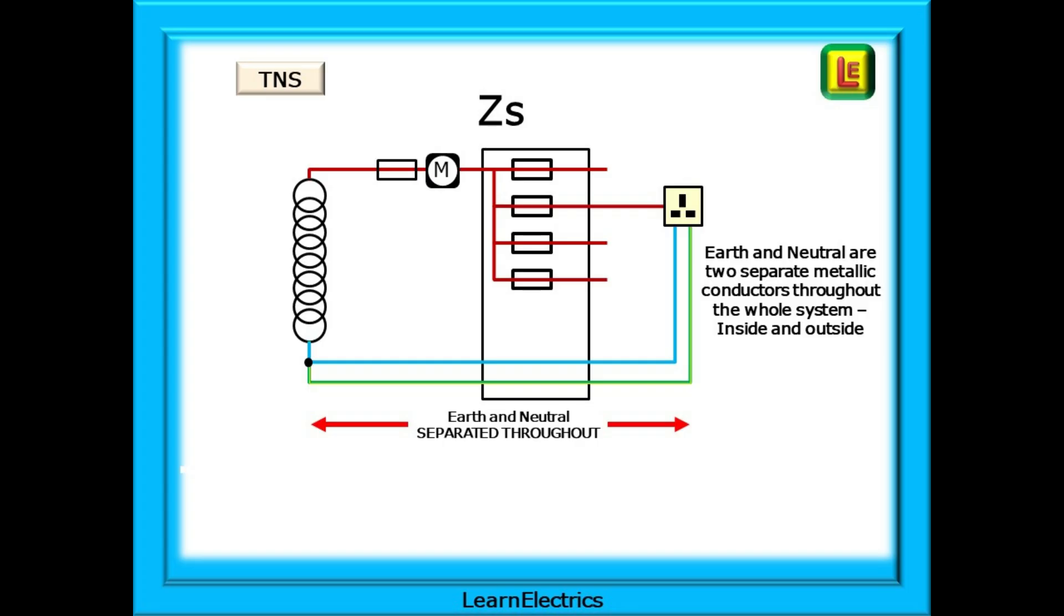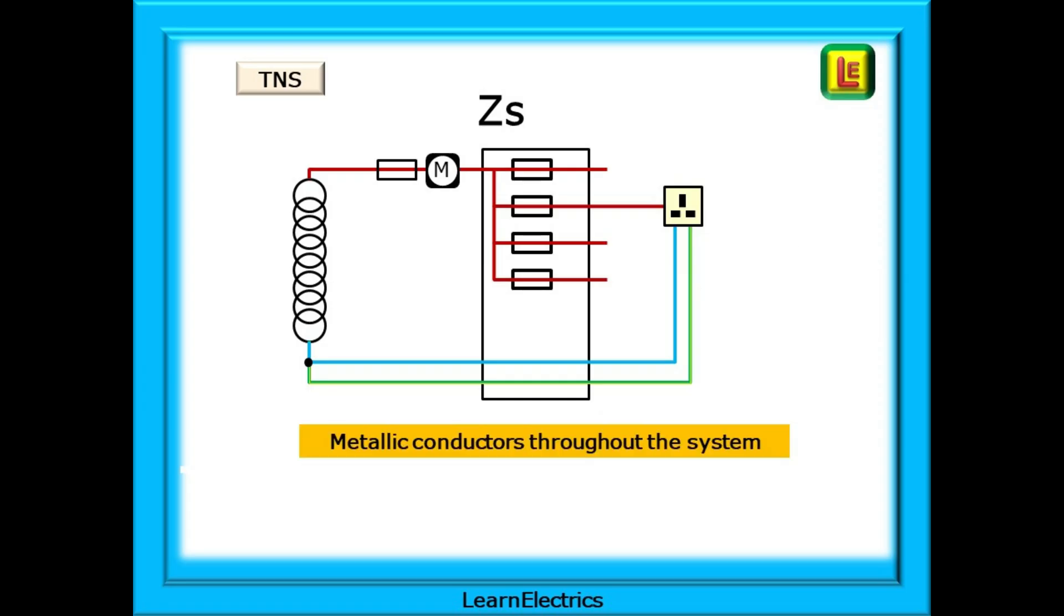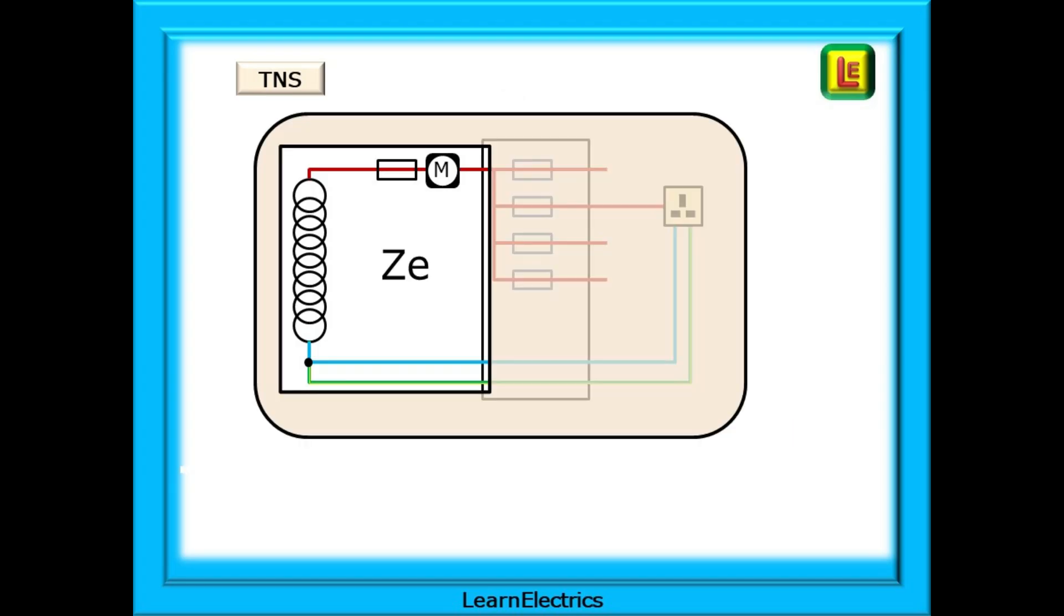The Earth, the Neutral and the Phase are all separate metallic conductors. For the internal part of the installation, they are very often copper, or perhaps aluminium in some older properties, whilst the external part will be metallic alloys for the Phase and Neutral, with a lead sheath for the Earth.